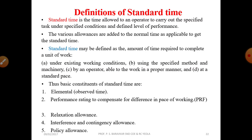The basic constituents of standard time are: first, the element time; second, the performance rating to compensate for differences in pace of working; third, the relaxation allowance; fourth, the interference and contingency allowance; and fifth, the policy allowance.